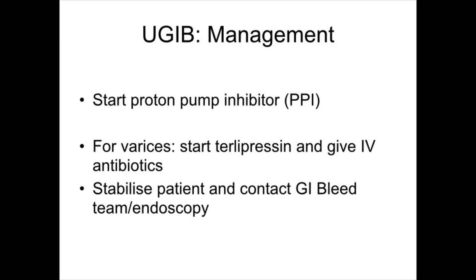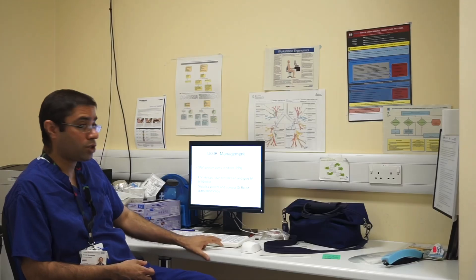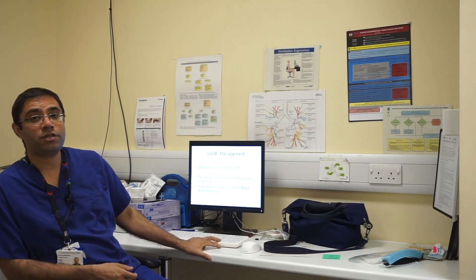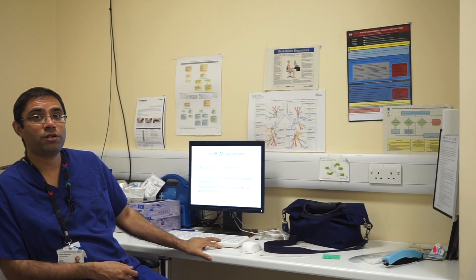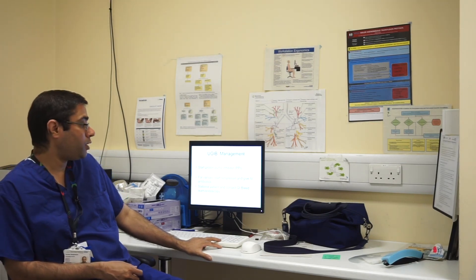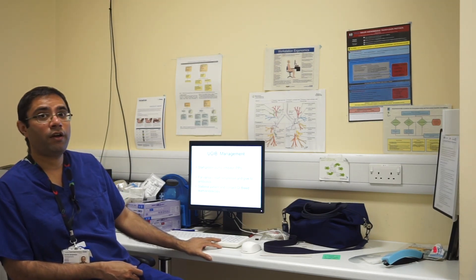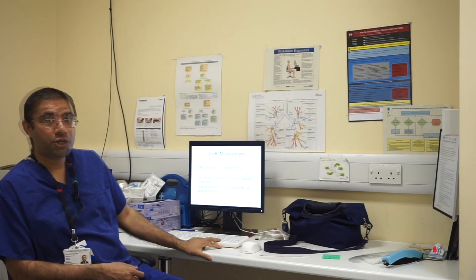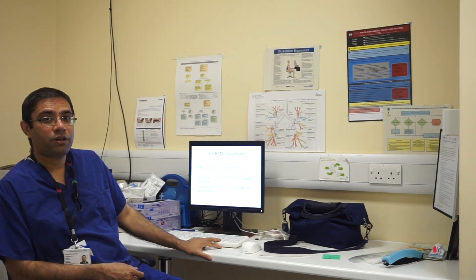Once the patient is stabilised, contact the upper GI team in your local hospital for an urgent endoscopy. The discharge destination from the initial resuscitation department should be based on the stability of the patient. Massive upper GI bleeds usually require intensive care admission for close monitoring and aggressive management.